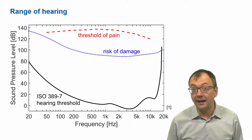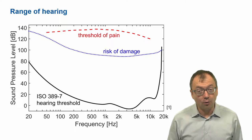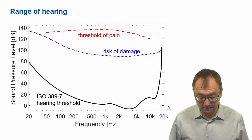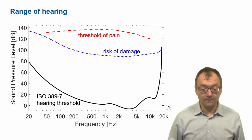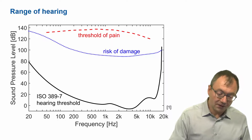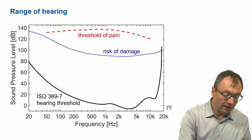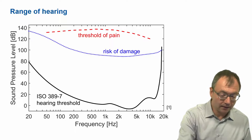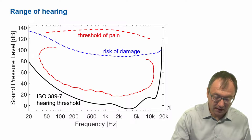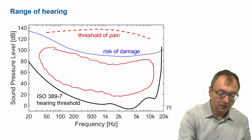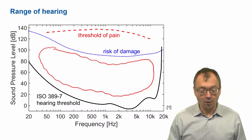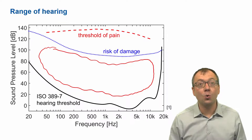I hope nobody of you has ever experienced that. And I hope you try to avoid going beyond that risk of damage when you're going out to clubs and listening to music. Apropos music — where is music located in this picture? Music covers frequencies from a few tens of Hz all the way to beyond 10 kHz, and it can go up to 100 dB and down to very few decibels when you're playing in an orchestra very quietly.